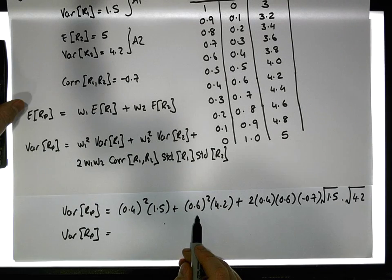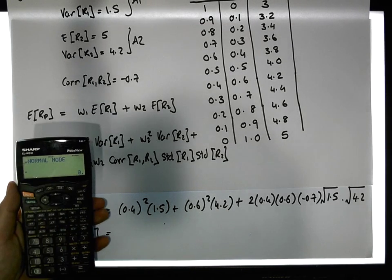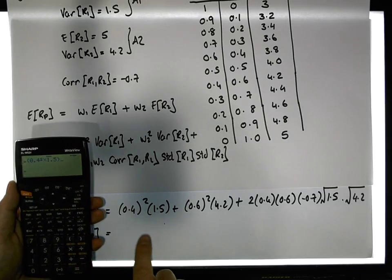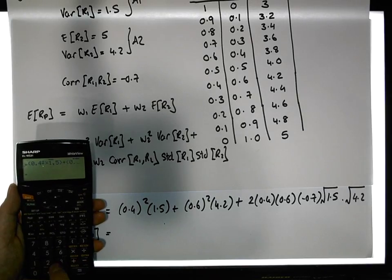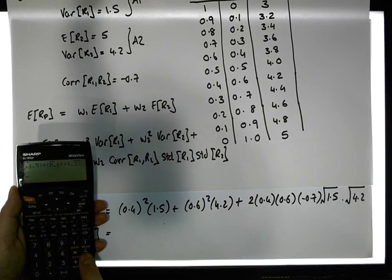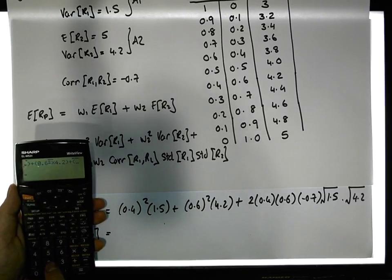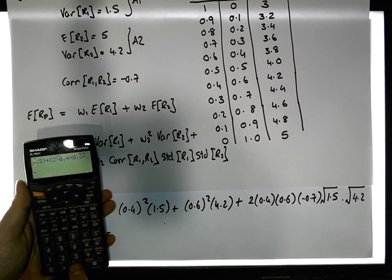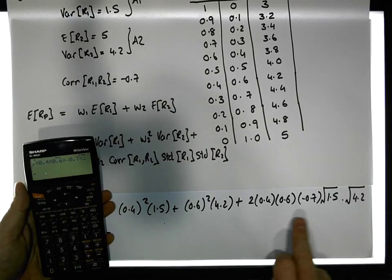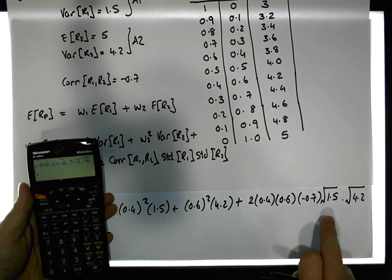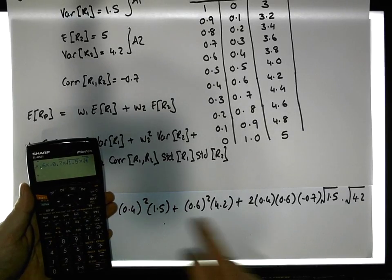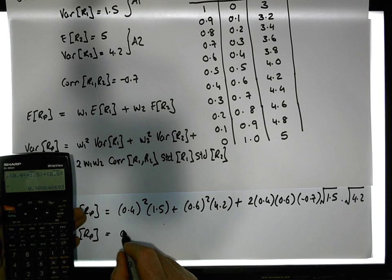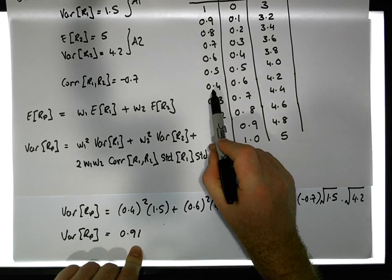This gives us the variance for a portfolio with a 40/60 mix between asset one and asset two. Working it out: 0.4 squared times 1.5, plus 0.6 squared times 4.2, plus 2 × 0.4 × 0.6 × (−0.7) × √1.5 × √4.2. That gives a value of approximately 0.91 — so the expected variance for a 40/60 mix is 0.91.